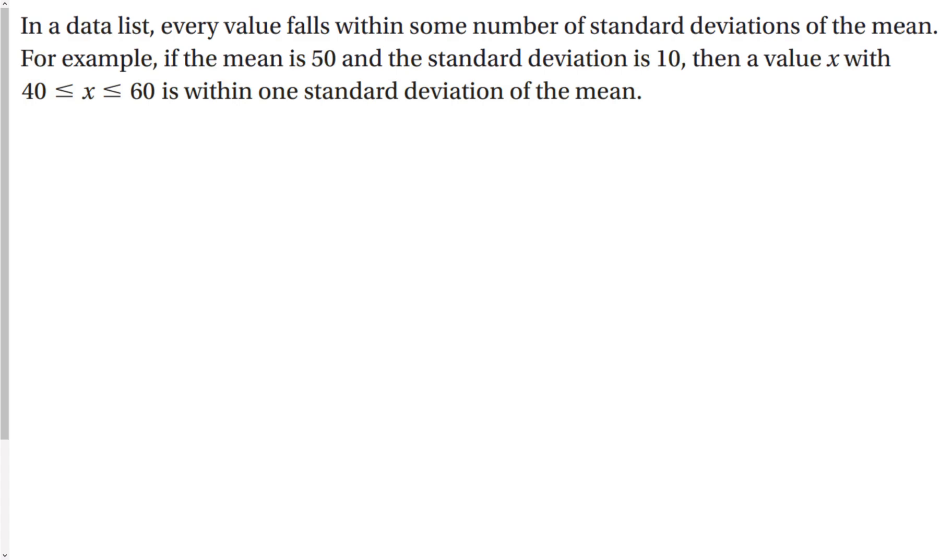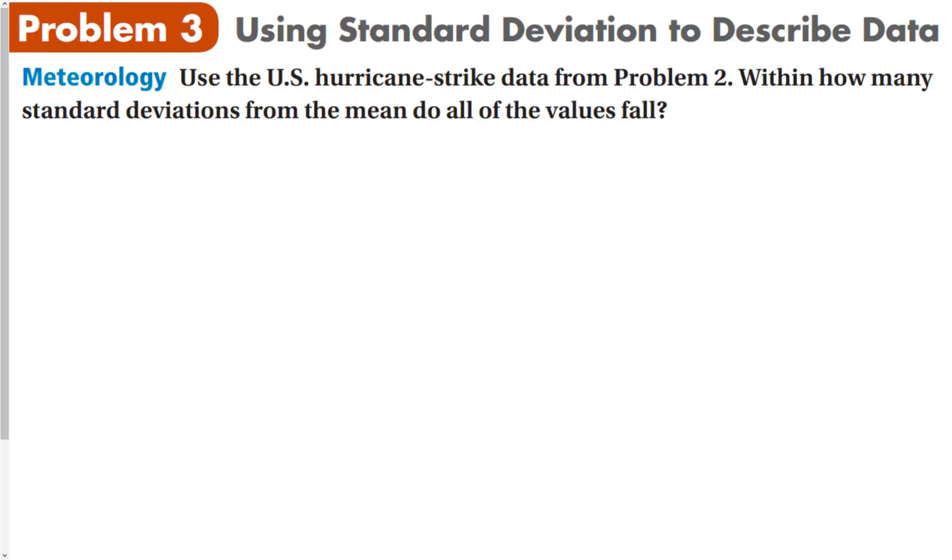In a data list, every value falls within some number of standard deviations of the mean. For example, if the mean is 50 and the standard deviation is 10, then a value x between 40 and 60 is within one standard deviation. That's really a way we use to measure data.